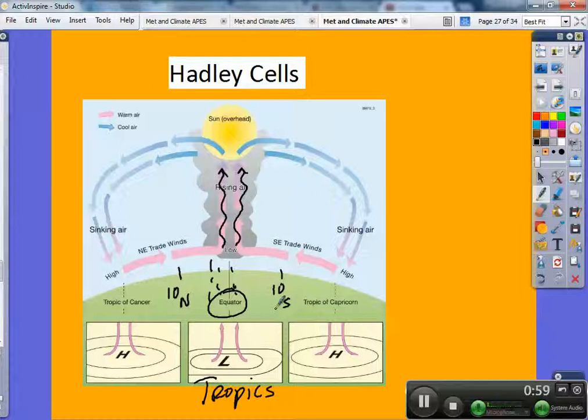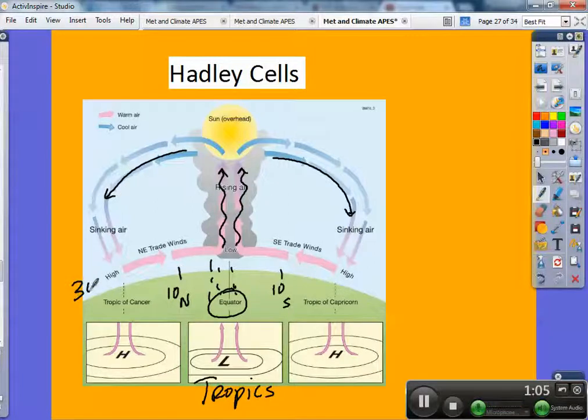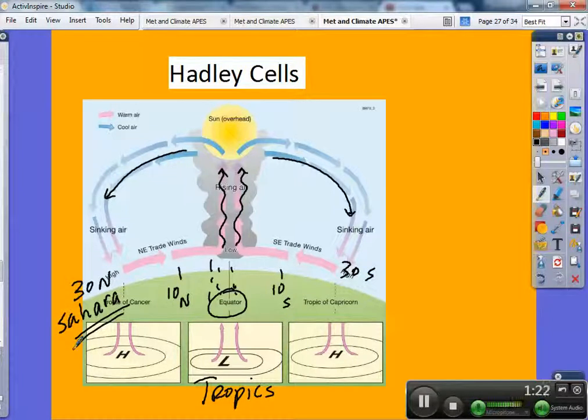The cool, dry air then descends over here at about 30 degrees north and 30 degrees south, forming the belts of deserts that are seen around the world in these latitudes. 30 degrees north, you've got the Sahara. And if you look at the very little amount of land that there is in the southern hemisphere, you'll see some desertification taking place around 30 degrees south latitude as well.